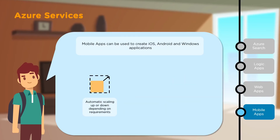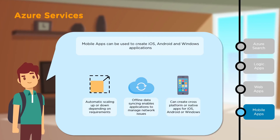Finally, we have Mobile Apps, which allows you to create applications for iOS, Android and Windows platforms. One advantage is that it automatically scales up and down based on your requirements. In situations where you have network issues, offline data syncing ensures your applications work anyway. You can also create cross-platform or native applications for iOS, Android and Windows.